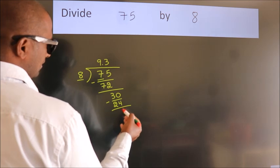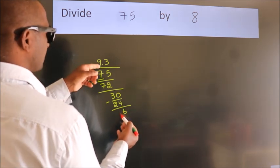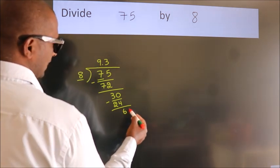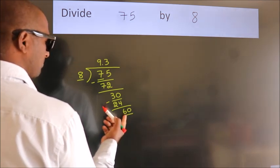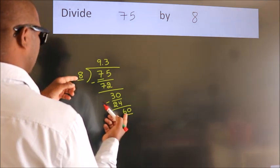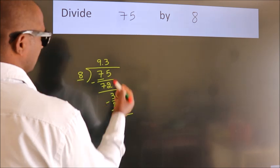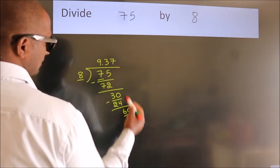After this, we already have the decimal. So directly take 0. So 60. A number close to 60 in the 8 table is 8 sevens, 56.